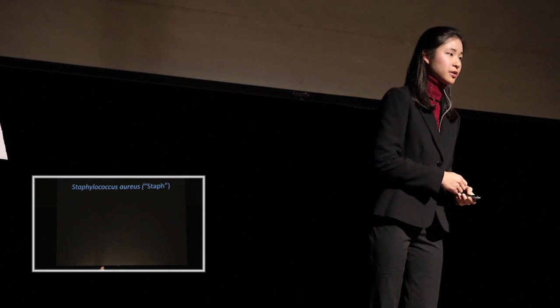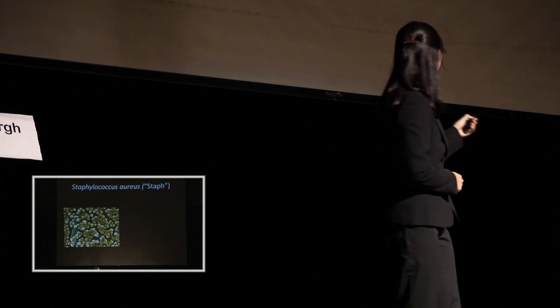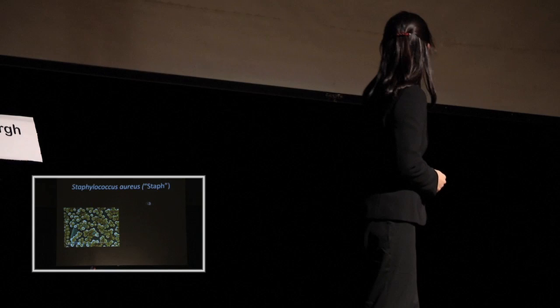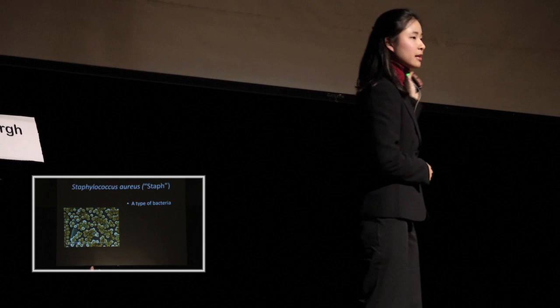I mentioned before that MRSA is a type of staph bacteria, or Staphylococcus aureus. Now, here's a picture of what staph looks like under the microscope, magnified by about 10,000 times. So this would not be visible with the naked eye. Its long name literally translates to golden grape clusters, which is exactly what it looks like.